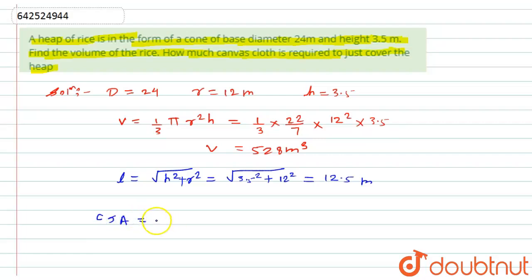Now I will simply say the curved surface area will be S equals πrl. So I will put here the values, that is 22/7 into r is 12 and the slant height we have calculated is 12.5, which will be equal to 471.42 meter squared.